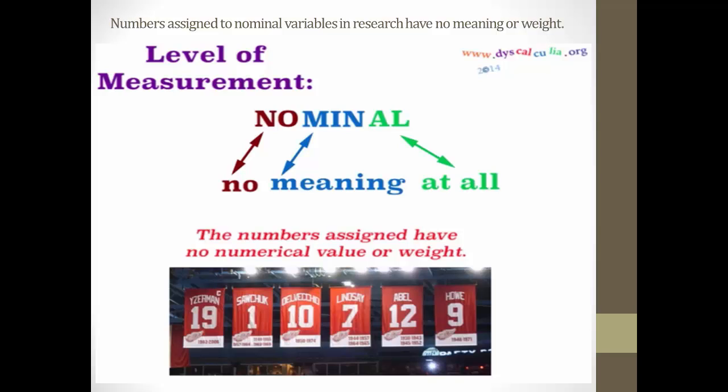Now, this might help a little as far as the visual goes to remember this. Numbers assigned to nominal variables in research have no meaning or weight. For example, if you look at these numbers. Now, I'm not a sports person. I think these are maybe basketball or something like that. Jerseys. But the point being here, these numbers assigned to a person, they're not saying that this person is better than this person because this person is number one and this person is number nineteen. These are just arbitrary. They're random numbers and they're assigned to these people. But they don't hold weight or value. And that's the same thing in research.